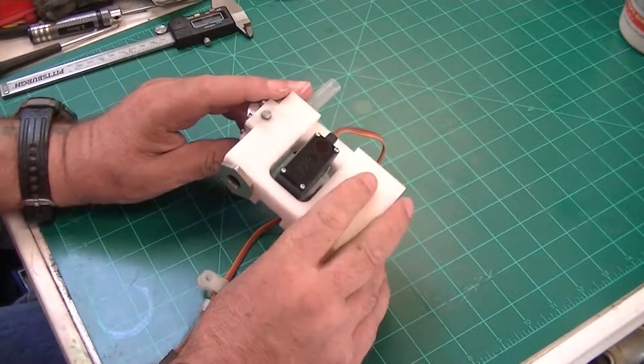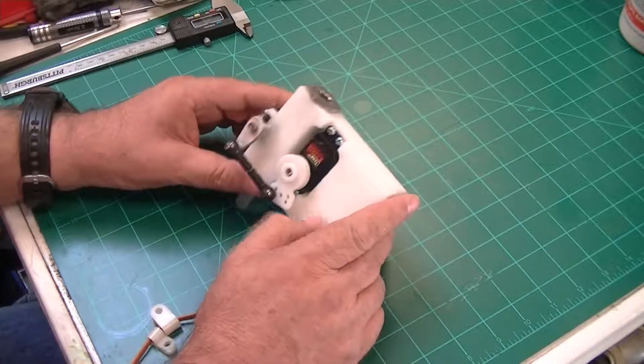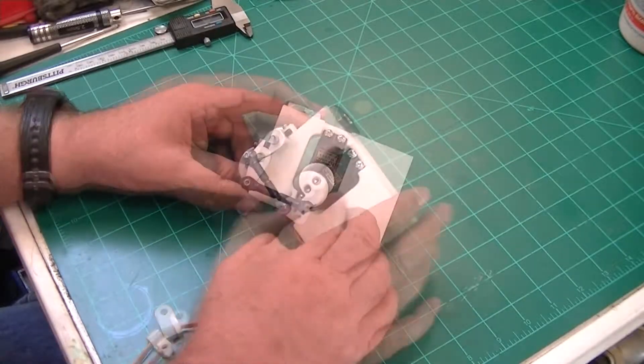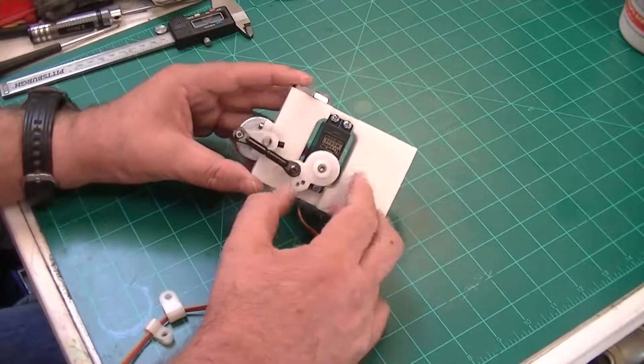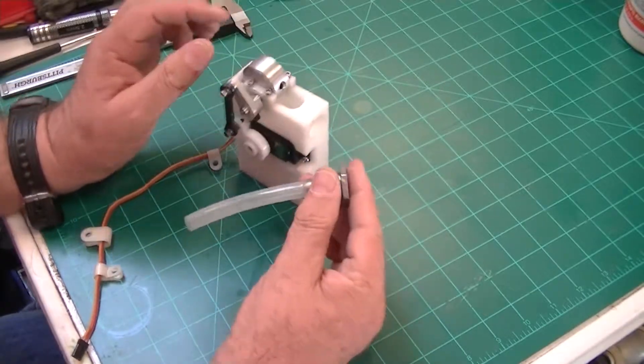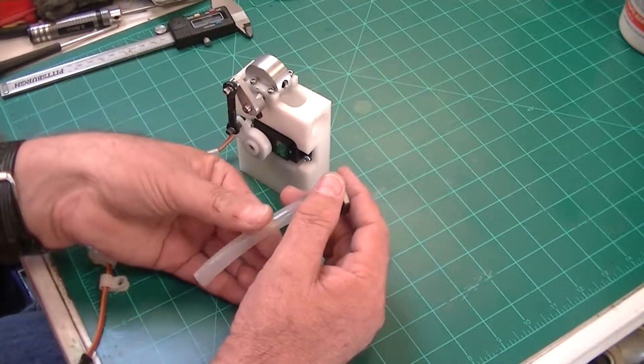The valve is made from a fabricated block of delrin plastic and some standard RC parts. An RC servo motor drives the eccenter, which is compressing a piece of silicon tubing, creating a sanitary valve.